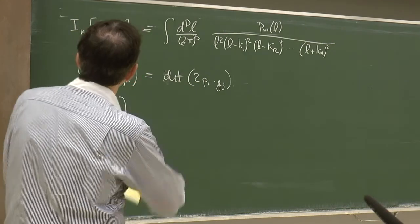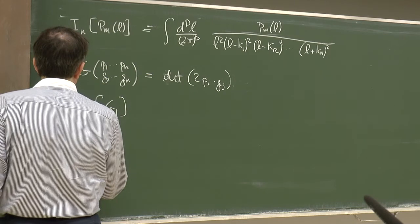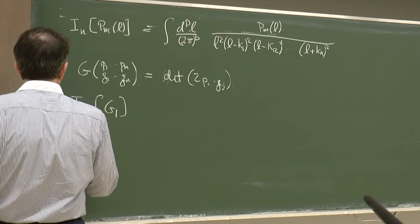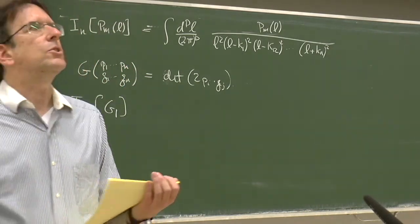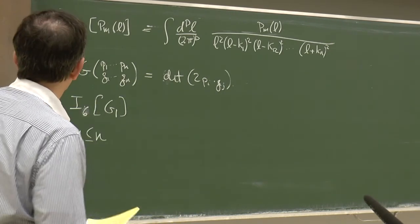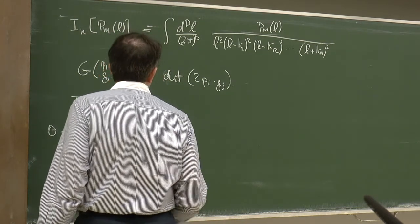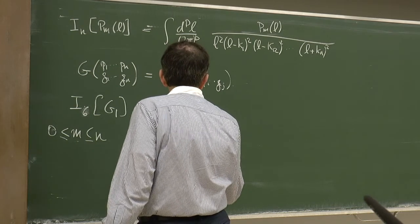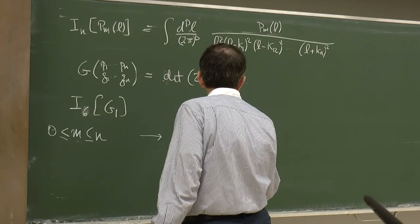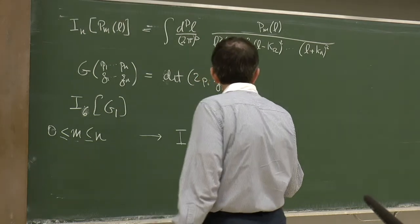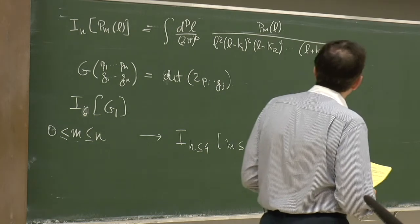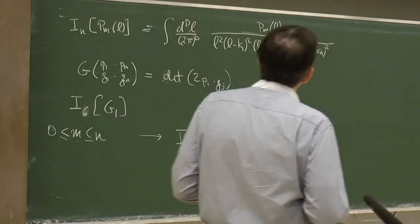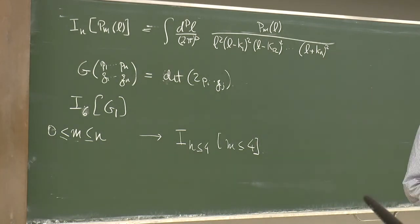This morning we saw how to take the set of integrals — where for gluon amplitudes M, the degree of the polynomial in the numerator in L, goes up to the number of legs, for example up to 17-point functions for 2-to-15 scattering — all the way down to integrals with no more than 4 legs, and correspondingly M is also less than or equal to 4. We can simplify further using Lorentz invariants. This is usually called the Passarino-Veltman decomposition.